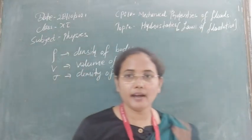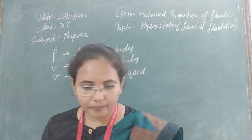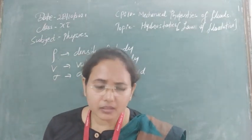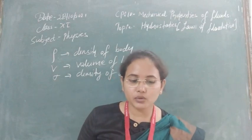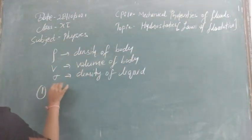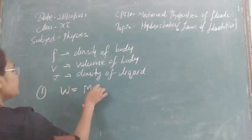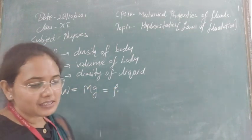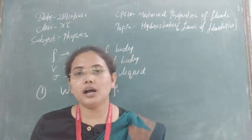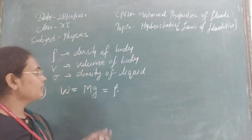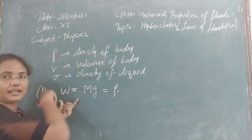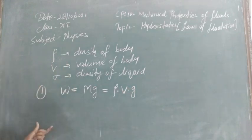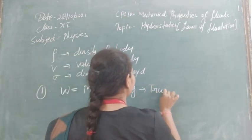Now, two forces act on the body when it is immersed. The first force is the true weight W, which equals mass times gravity. The mass of the body can be written as density times volume, so W equals rho times V times g. This true weight acts in the downward direction.